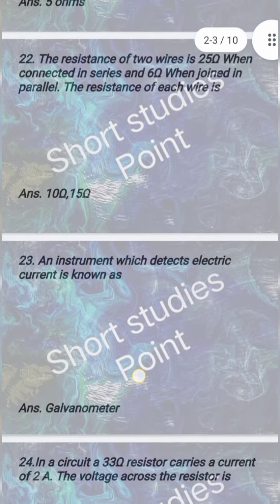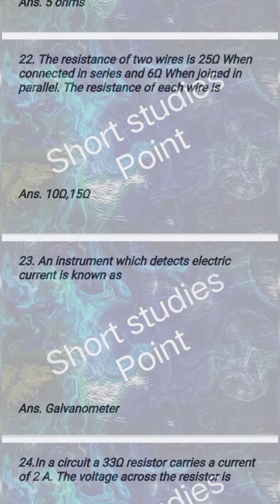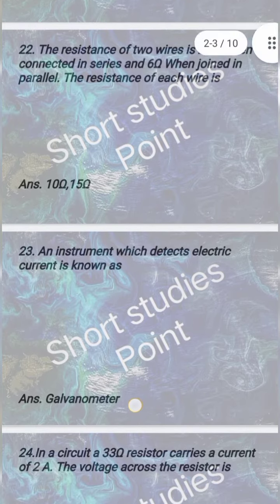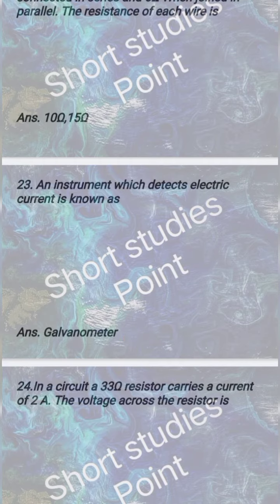Question 4: The resistance of two wires is 25 ohm when connected in series and 6 ohm when joined in parallel. The resistance of each wire is 10 ohm and 15 ohm.